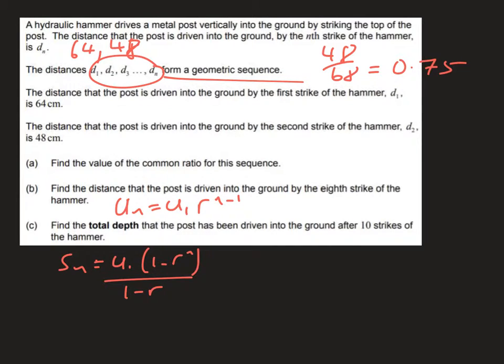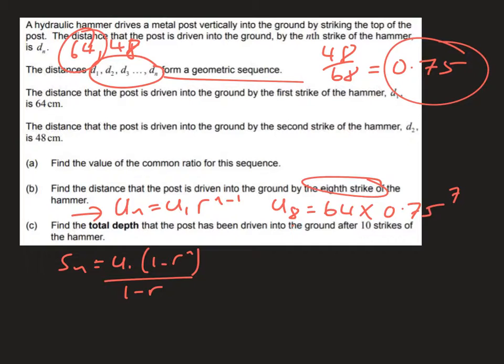To find the distance that the post is driven into the ground by the 8th strike, we can now find out the general formula using the formula UN equals U1 R to the power N minus 1. So for U8, that's going to be U1, which we know from up here is 64, times R, which we know from up here is 0.75, to the power N minus 1. So if 8 is N, that's going to be to the power 7, and if you calculate that you end up with an answer of 8.54 centimeters.